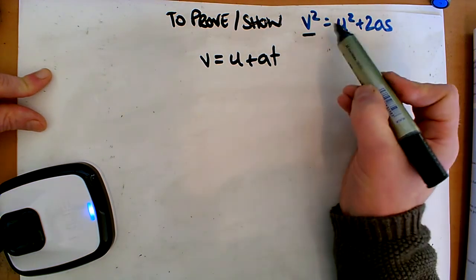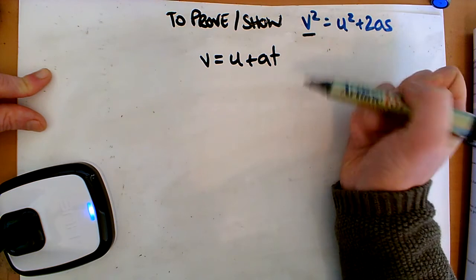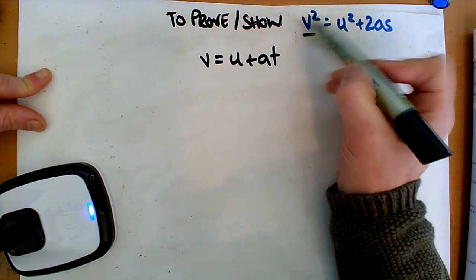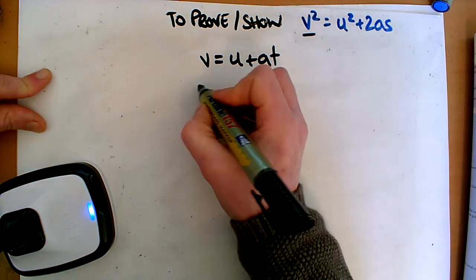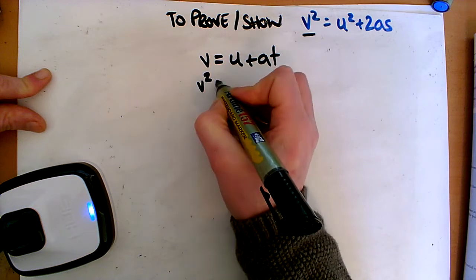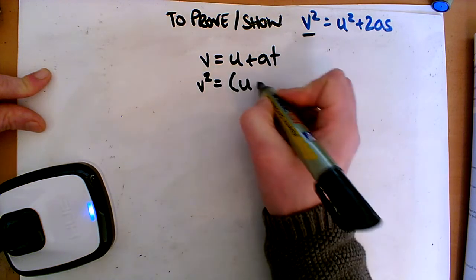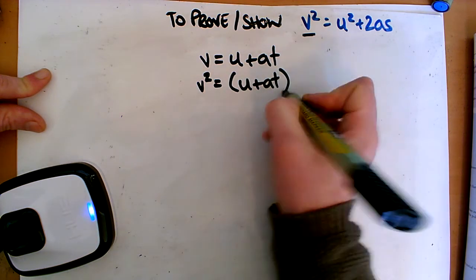Okay, so we can look at this, this is what we want to prove or show. So we're going to first want to square the v, because that's it. So if we square one side, we have to square them both. So it's easy to square this side, it's only the v, but this one will have to square everything.